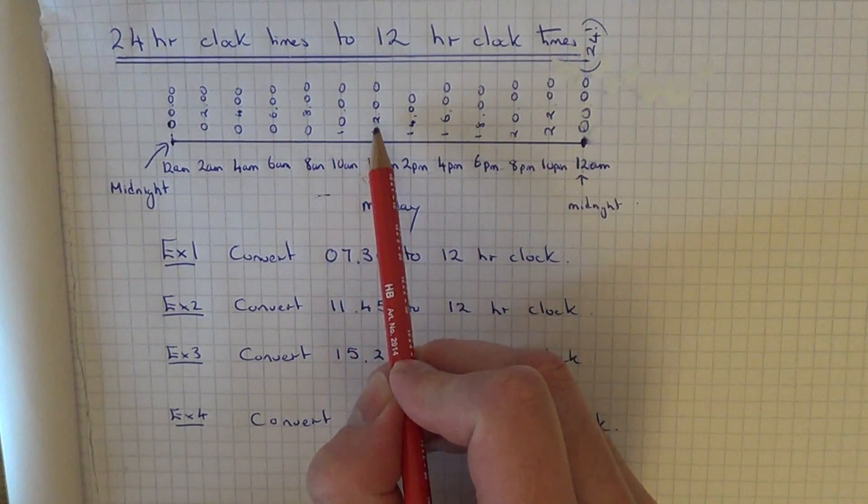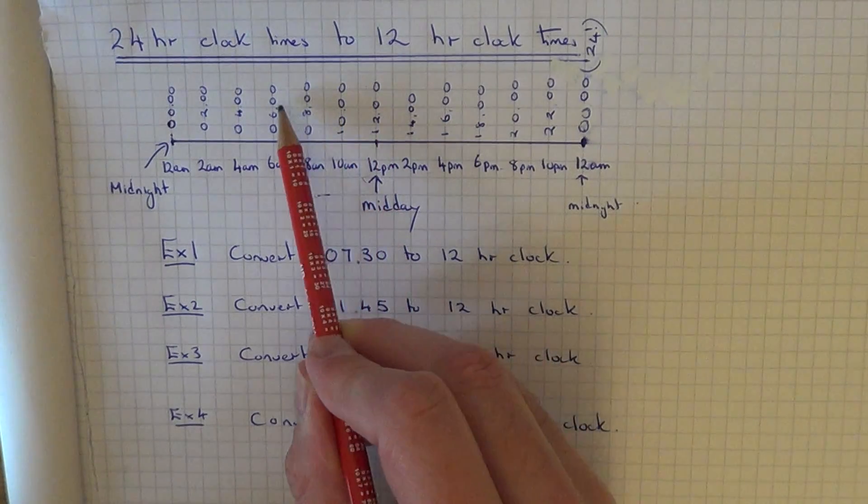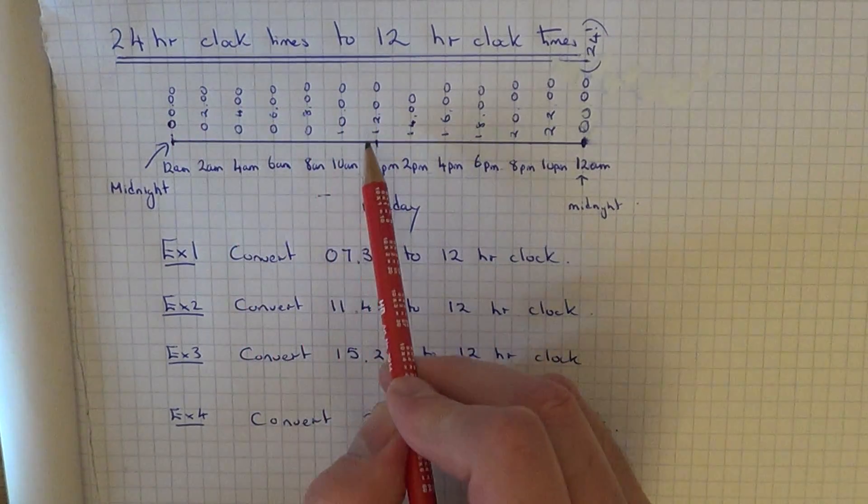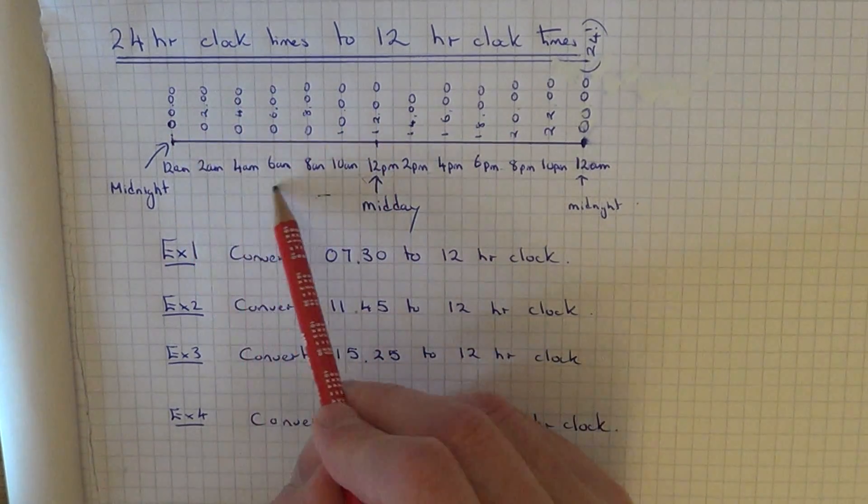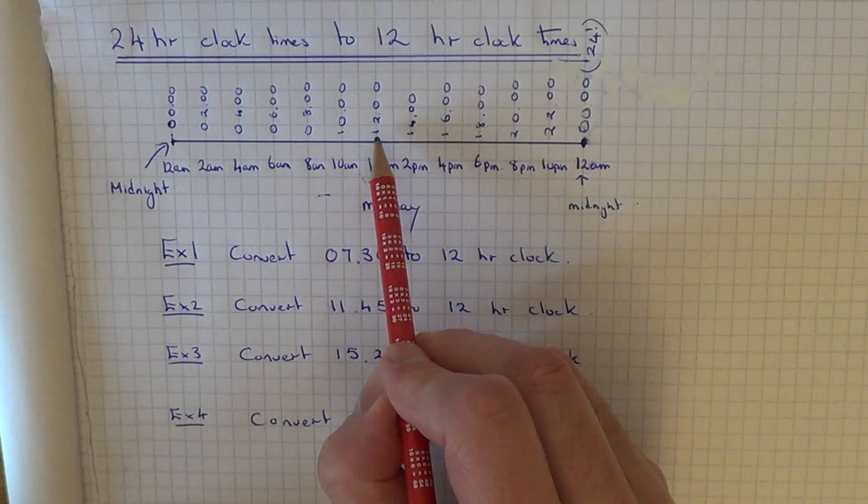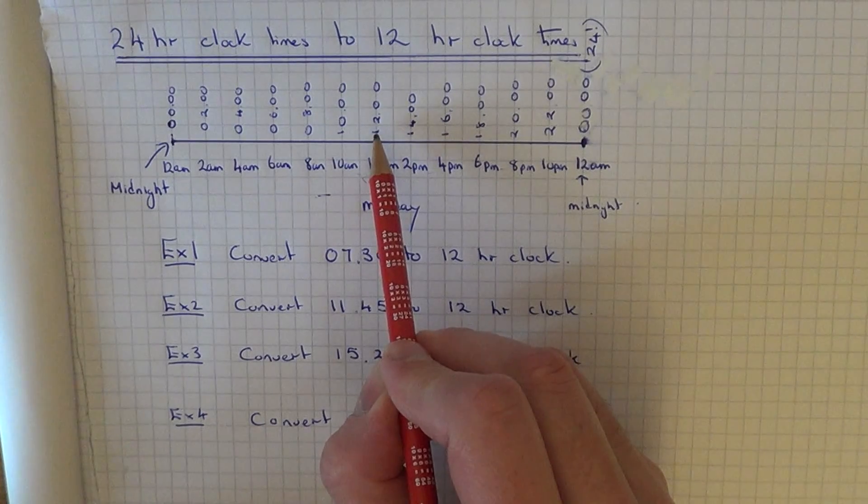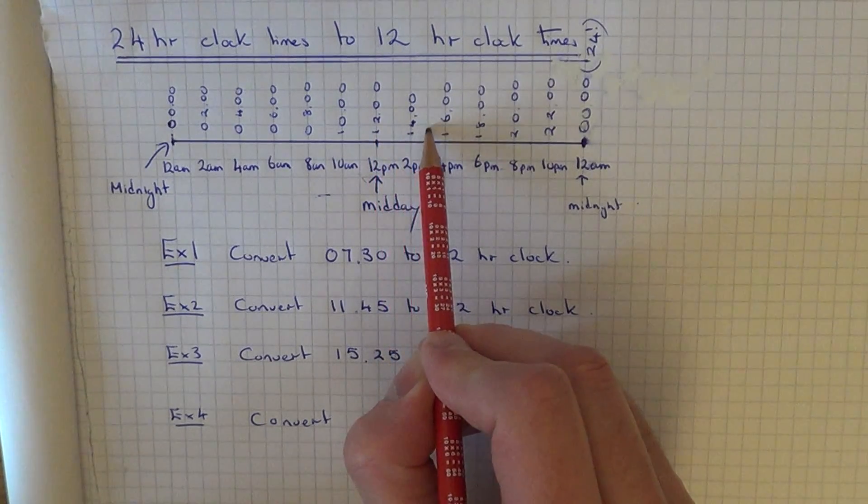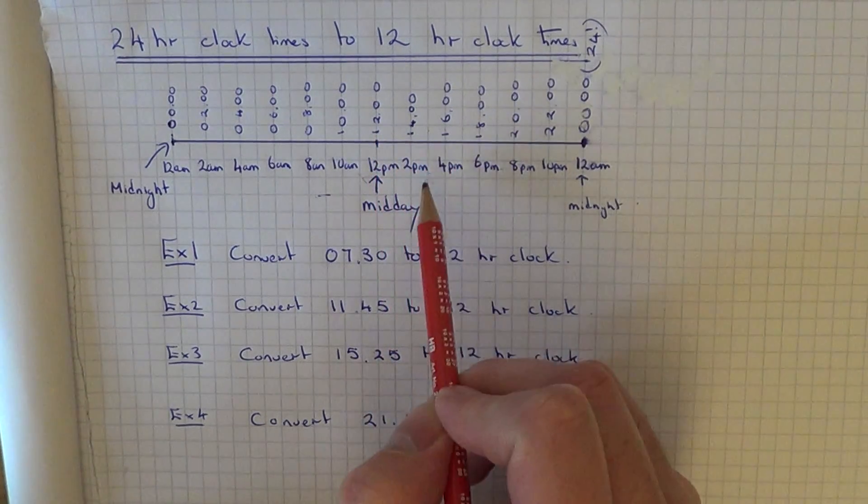Notice with the morning times they stay exactly the same as what they are with the 12-hour clock times. It is only from midday in the afternoon where you have to be careful because it goes on from 12, so it goes 12, 13, 14, 15, 16, 17, 18, etc.